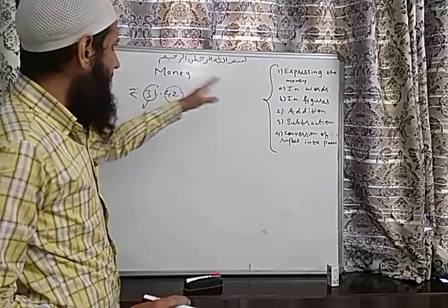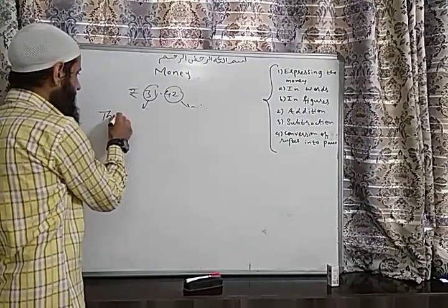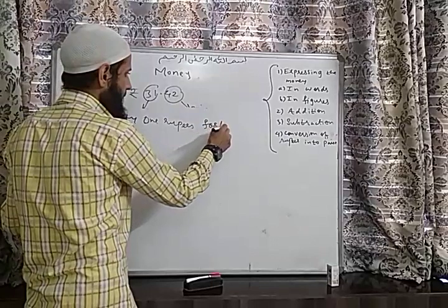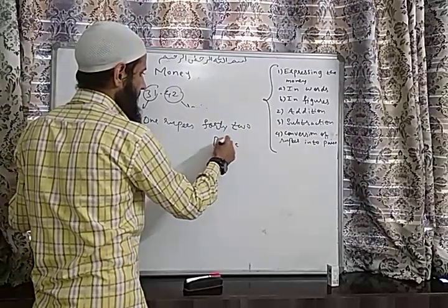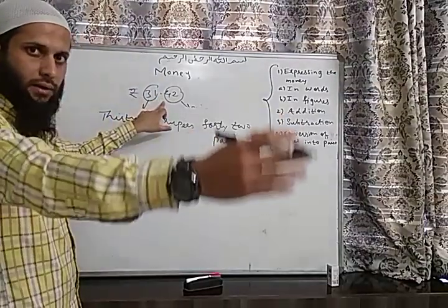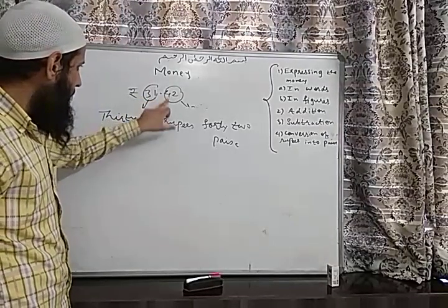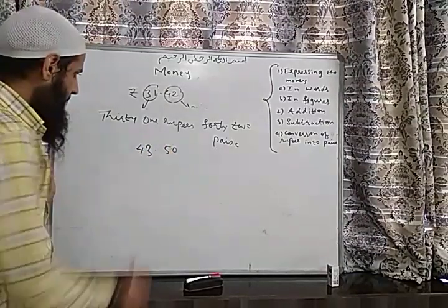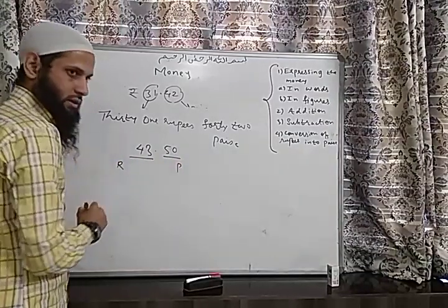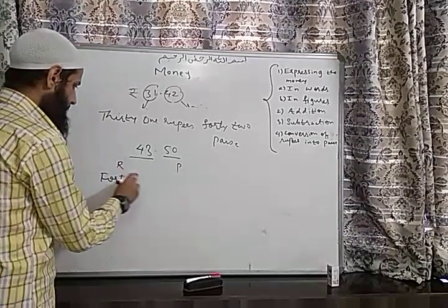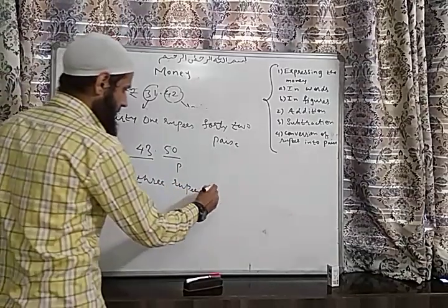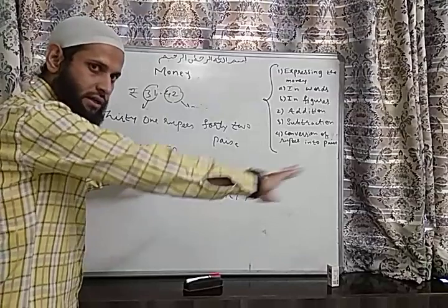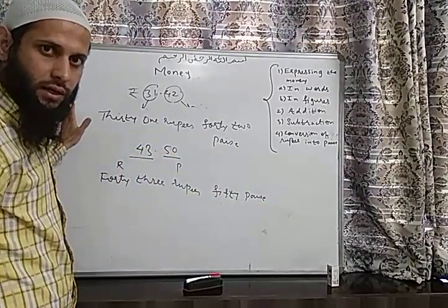This is called expressing money in figures. Now if I want to express 31.42 in the form of words, you will write: 31 rupees 42 paise. It means at the left side of the point it will be rupees and at the right side it will be paise. One more example: if I write 43.50, it will be 43 rupees 50 paise. Whatever is at the right side of the point will be paise, and whatever is at the left side of the point will be rupees.